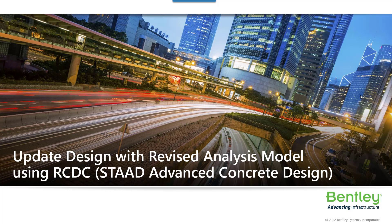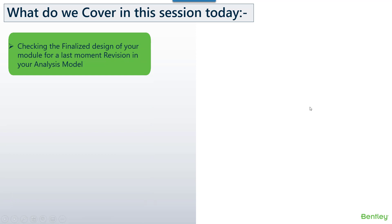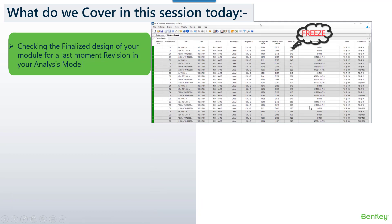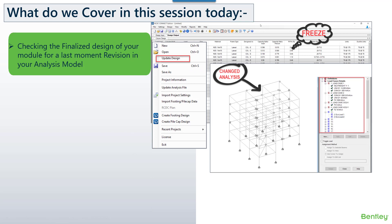So let's get started. What we cover in this session today is what is update design. If you have finalized or pre-estimated your design in RCDC and you get a last-moment change in your analysis file, there is an option in RCDC known as update design. The option is available in the file menu. Once you click on update design, a window will pop out wherein you can select your updated or revised analysis model and then proceed ahead for updating the design.